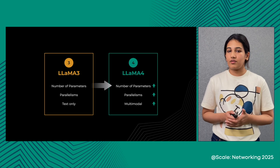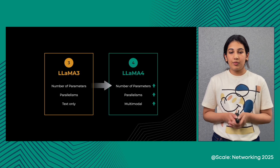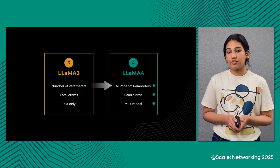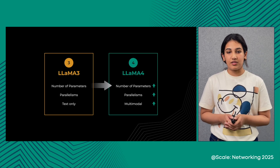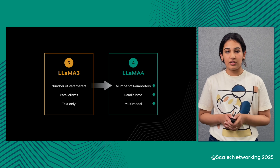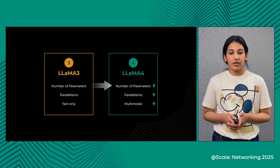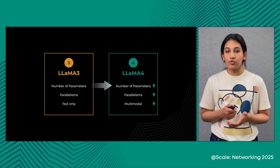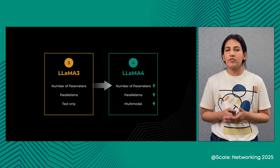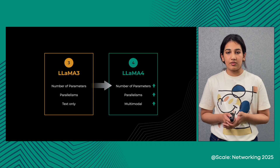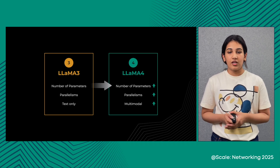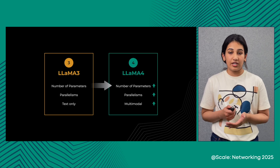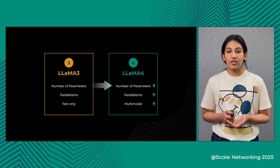The number of parallelisms have also gone up. In LAMA 3, we had four degrees of parallelism. In LAMA 4, we introduced a new layer called expert parallelism to support our mixture-of-experts models. Further, the individual parallelism factors have also increased in scale by 2 to 4x. With bigger models and changing parallelisms, there's more traffic going out on the network. Our challenge is how do we scale our network and optimize our communication stack to train our models efficiently.